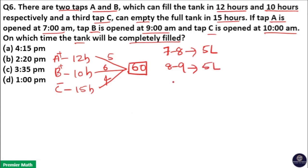At 9am, tap B also opened. That means 9 to 10am, both tap A and B are working. That is 5 plus 6, 11 liters is filling.